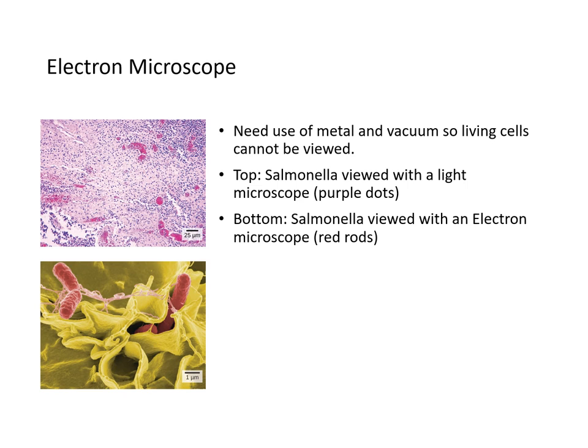Then there's the electron microscope. We need to use metal and vacuum, so living tissue or living cells cannot be viewed using this microscope. Here's an example of an electron micrograph: on top, Salmonella is viewed with a light microscope — those are the little purple dots. The bottom shows the same Salmonella viewed with an electron microscope, shown as the red rods.